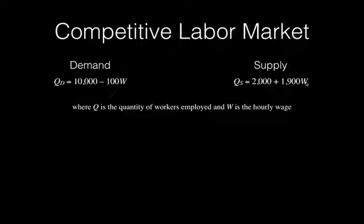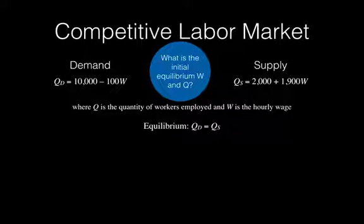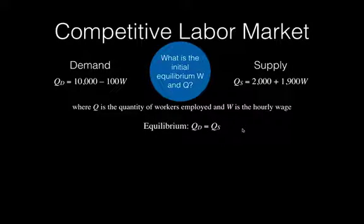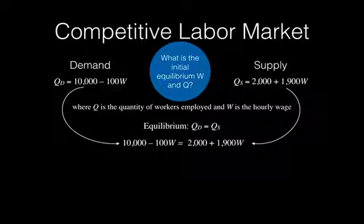You are given the supply and demand functions. What we want to find out is what is the initial equilibrium W and Q — we want to find the equilibrium wage rate and the equilibrium quantity of labor in this market. Equilibrium is going to be where quantity demanded is equal to quantity supplied, so we set QD and QS equal to one another.